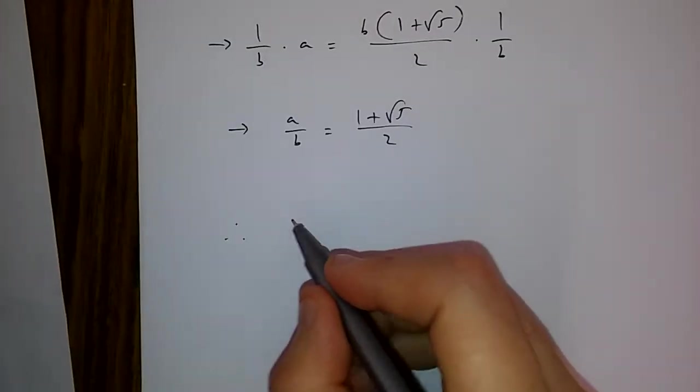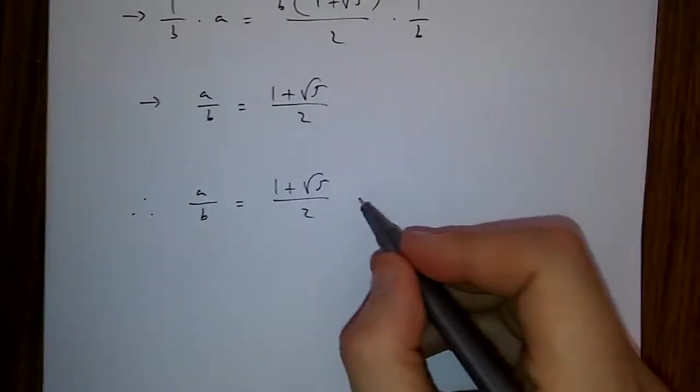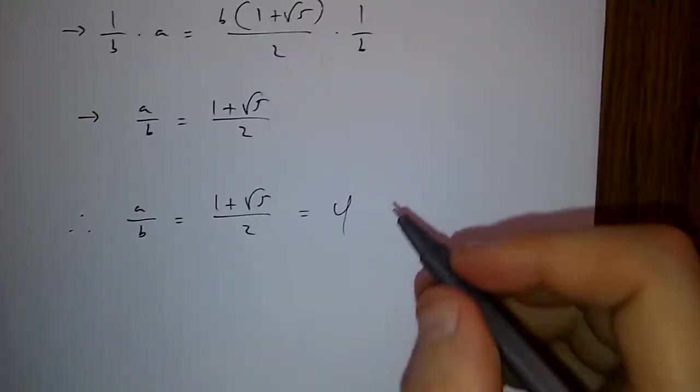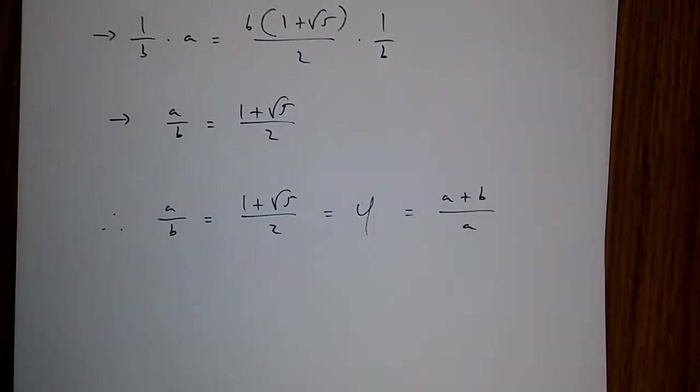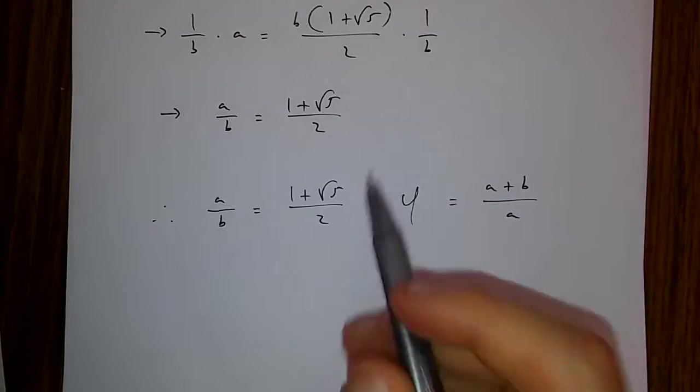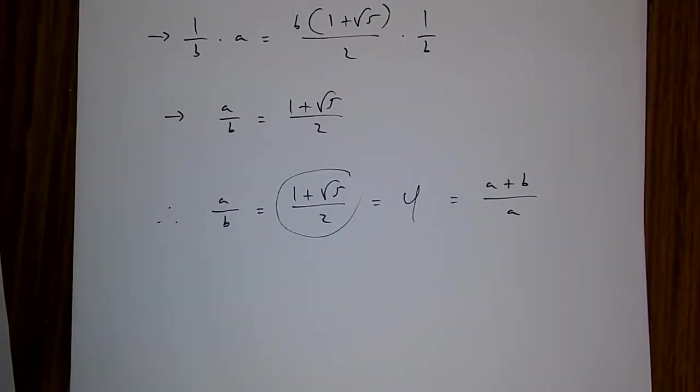Therefore, a/b is (1 + √5)/2, which is the golden ratio, which is (a+b)/a. And we've proven that the golden ratio is equal to this value.